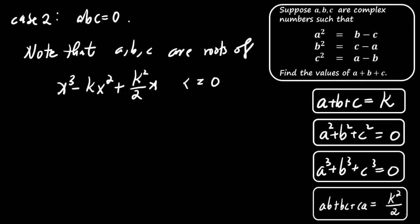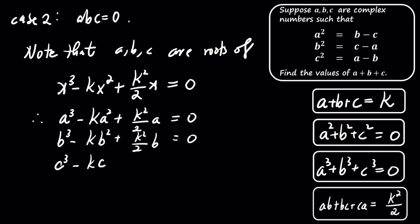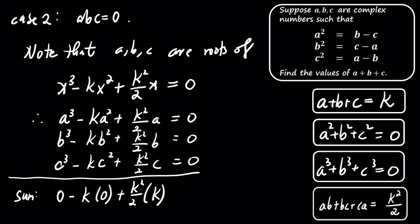In case 2, we assume that the product of A, B, and C equals 0. We find valid solutions where the sum of A, B, and C equals 0.